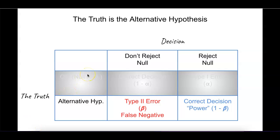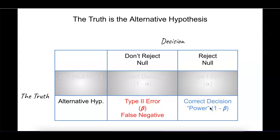Similarly, if the alternative hypothesis is true, you should reject the null hypothesis. But if you don't reject, you've committed a type 2 error — called beta — also known as a false negative. It's essentially failing to recognize that an effect did actually take place: a change occurred in the distribution and you just didn't recognize it. If the alternative hypothesis is true and you do reject the null hypothesis, you've made the correct decision — this is known as power, and it is 1 minus beta, the complement of the error.